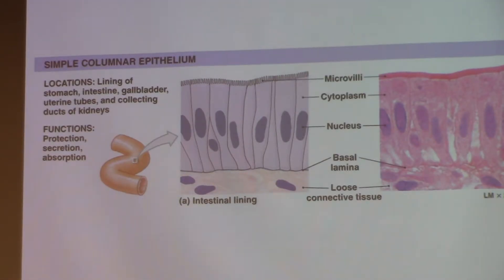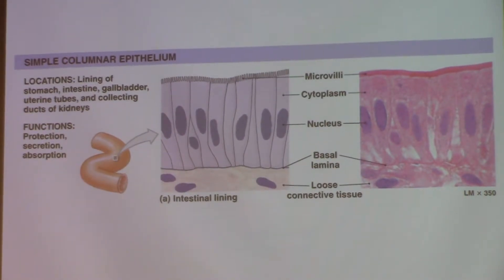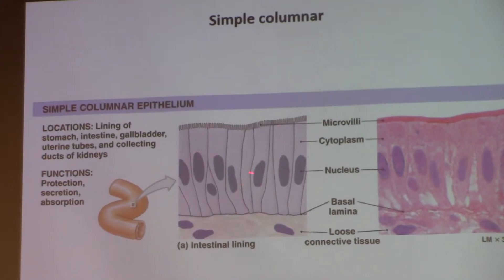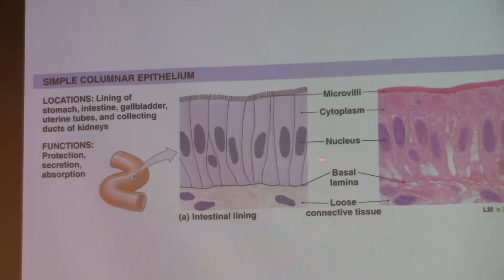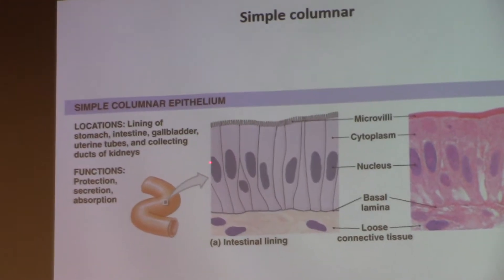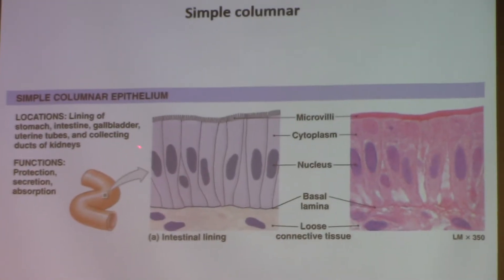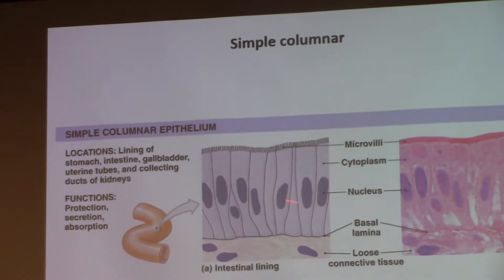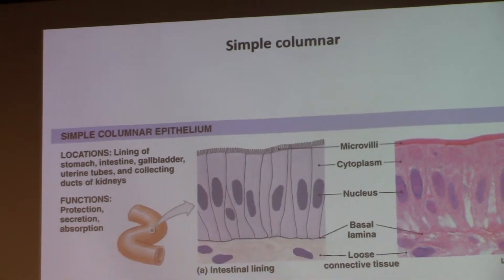Here is simple columnar. Again, first you find the edge, you find a lumen. There's my lumen. Therefore, this is only my layer of epithelium. There's the basement membrane. I have a single row of nuclei. They're rectangular in shape. So this is going to be simple columnar. Then an actual photograph of it.